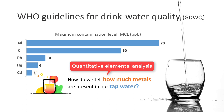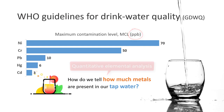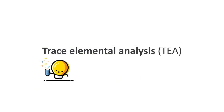If we look at the maximum contamination level of these five selected metals, they are all in the PPB region. Therefore, what we are interested in here is to measure trace amounts of heavy metals in water samples. In short, we are interested in trace elemental analysis, or TEA for short.